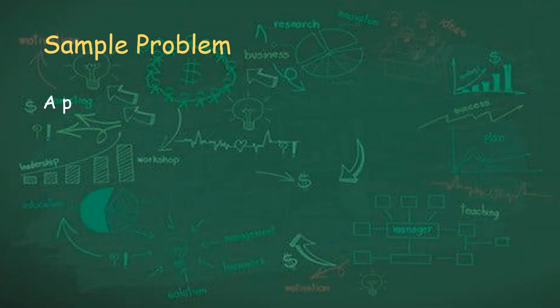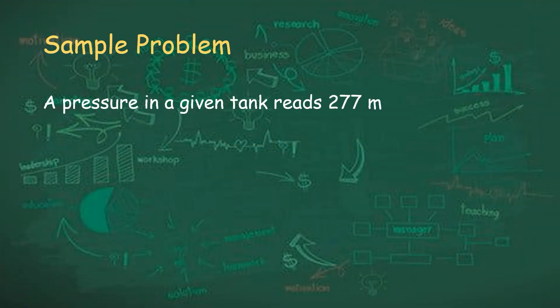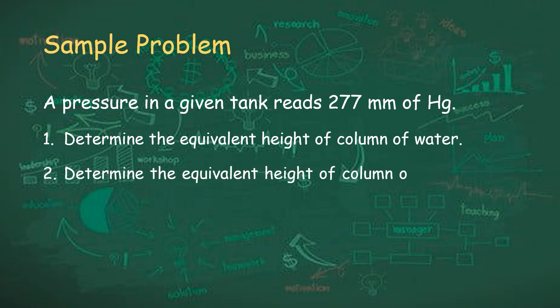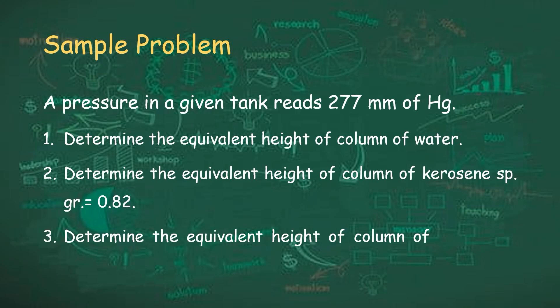The sample problem: a pressure in a given tank reads 277 mmHg. In this video, we are going to determine the equivalent height of a column of water, the equivalent height of a column of kerosene having a specific gravity of 0.82, and the equivalent height of a column of nectar having a specific gravity of 2.94.